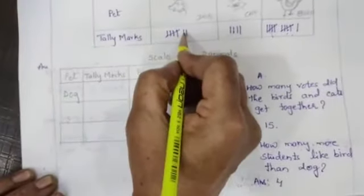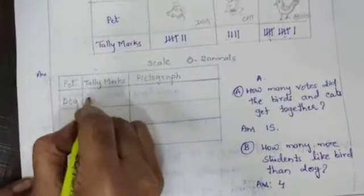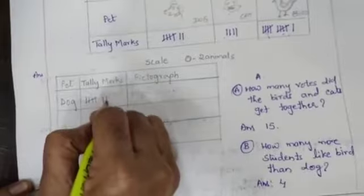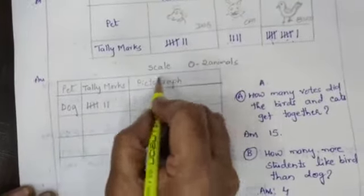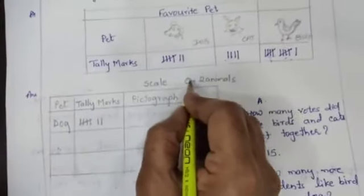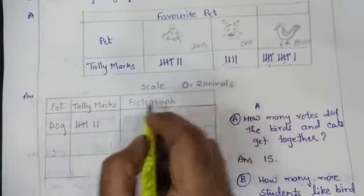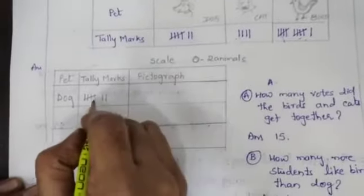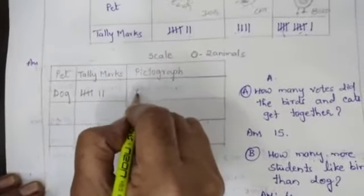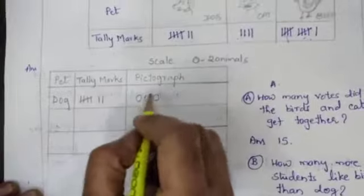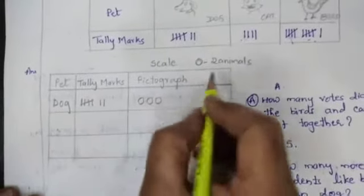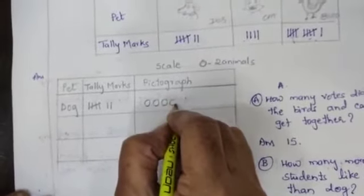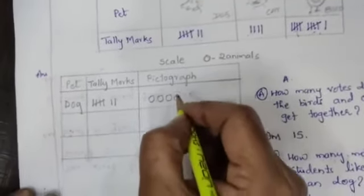For dog, how many tally marks are there? 1, 2, 3, 4, 5, sorry 6, 7. Pictograph: for dog I am taking circles. For all figures I am taking circles. So how many circles will you draw children for dog? Here 7 is there. So 1, 2, 3. Each is how many? 2 animals. So 6 dogs, half circle you have to draw.